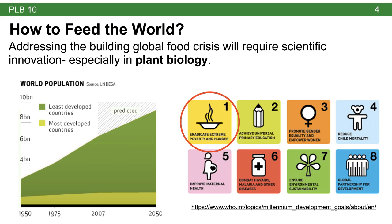The world's population is growing very rapidly, especially in the least developed countries where technology, especially in plant biology, may be in short supply. The WHO has identified eradicating extreme poverty and hunger as its primary goal. While this lecture is focused on California, it's important to recognize California's place in the global agricultural economy. California is an important exporter of many different food crops to places all around the world.